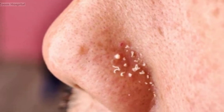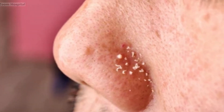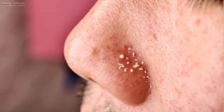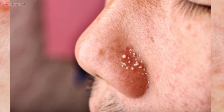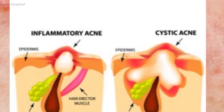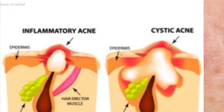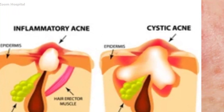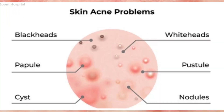Step 9: Use non-comedogenic cosmetics. When using benzoyl peroxide, choose cosmetics labeled as non-comedogenic, which means they won't clog your pores. This helps prevent further breakouts and allows the treatment to work more effectively.